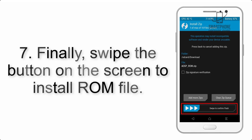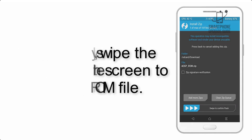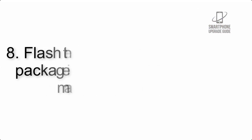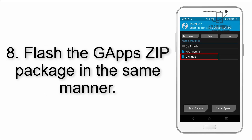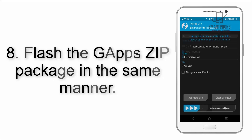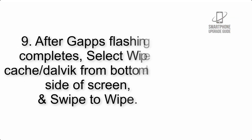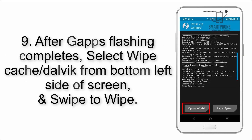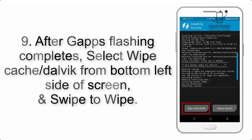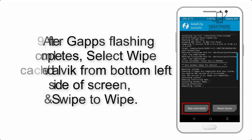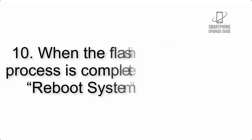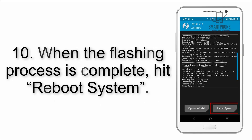Step 7: Swipe the button on the screen to install the ROM file. Step 8: Flash the GApps zip package in the same manner. Step 9: After GApps flashing completes, select Wipe Cache and Dalvik from the bottom left side of the screen and swipe to wipe.